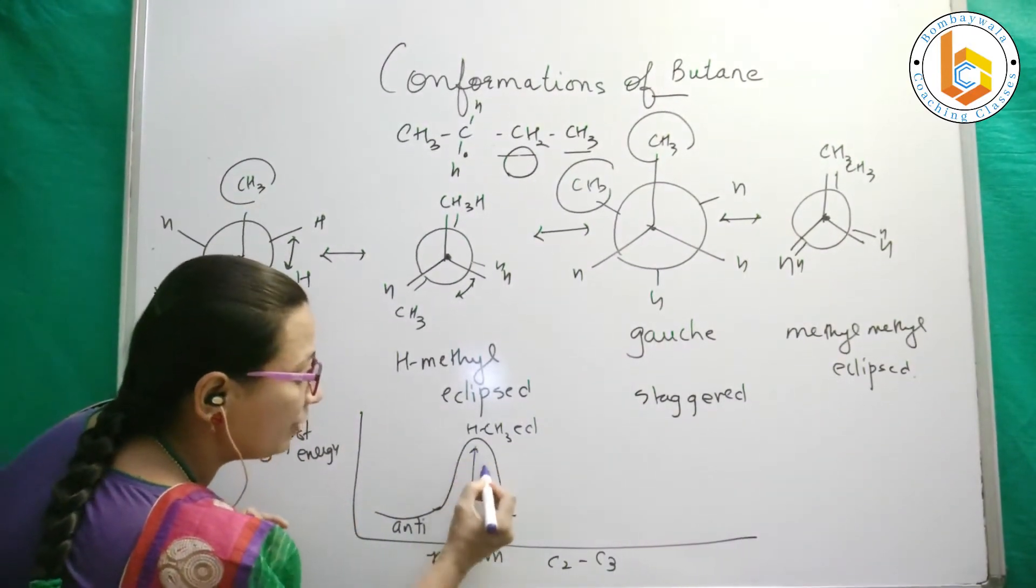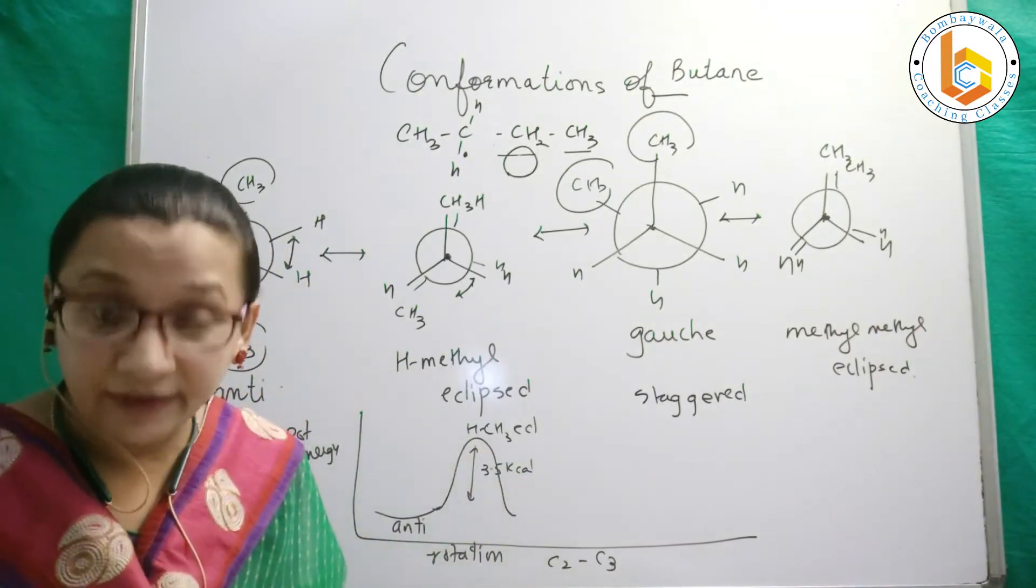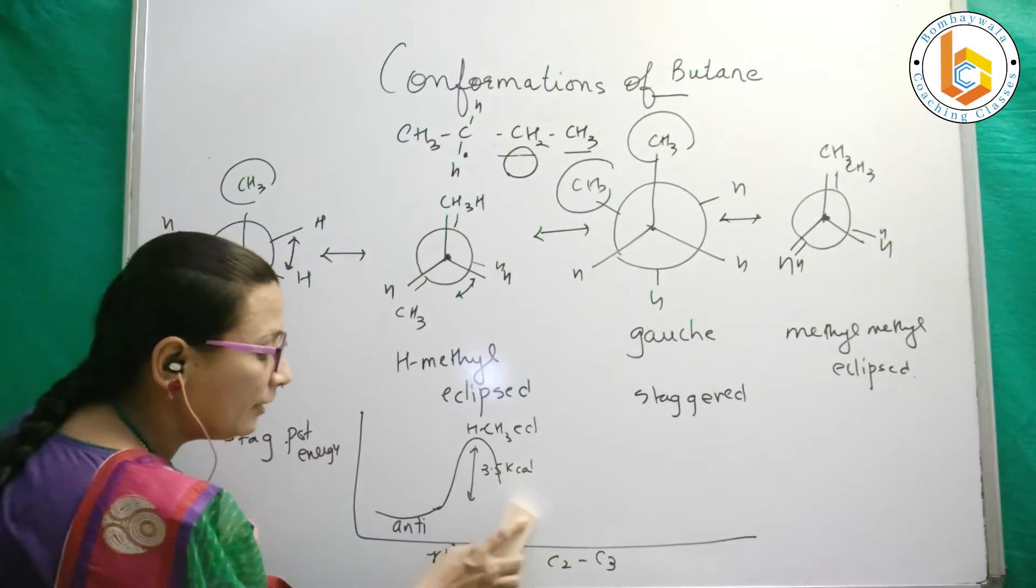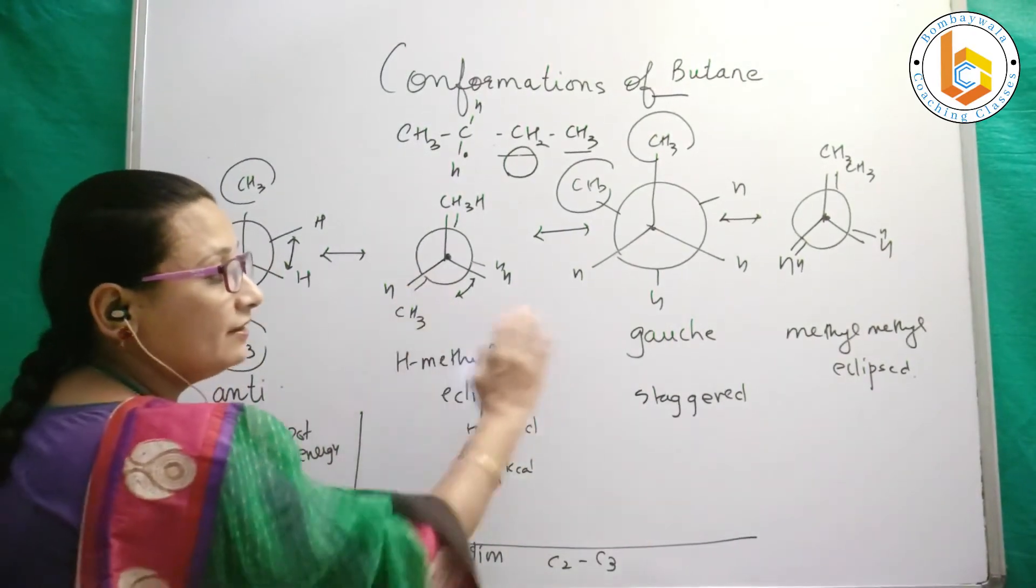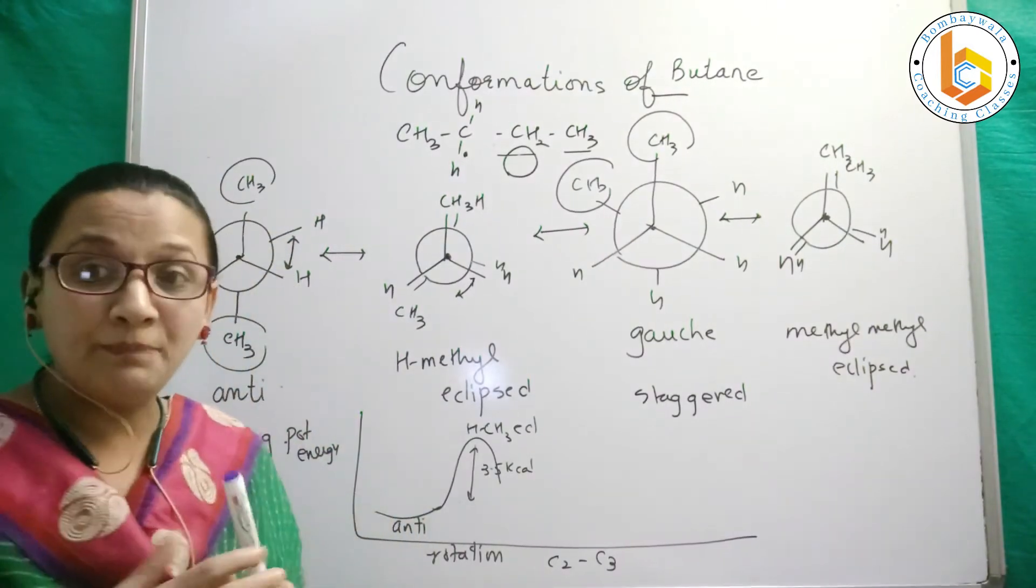Then this will again become another staggered conformation which is gauche. Gauche compared to eclipsed is less stable and more energetic.